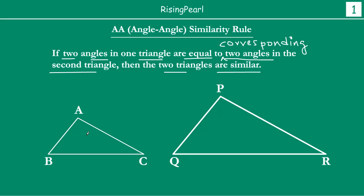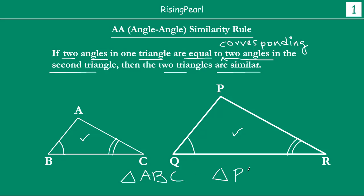Here we have drawn two triangles: triangle ABC and triangle PQR. If it is given to us that angle B is equal to angle Q, and angle C is equal to angle R, then what the theorem is telling us is we can say these two triangles, triangle ABC and triangle PQR, absolutely must be similar. This is what we are going to prove. Let's get started.